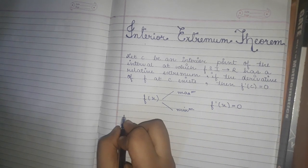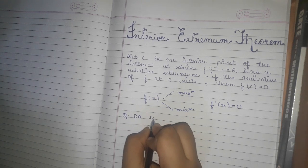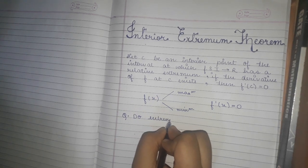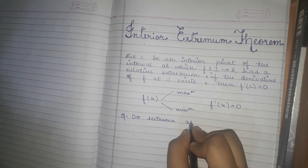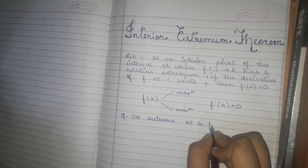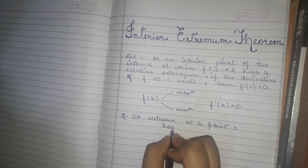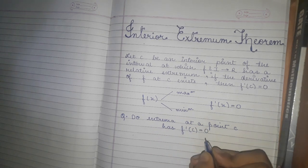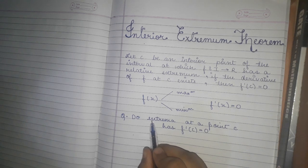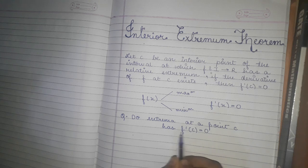The question arises: does every extrema — that is, minima or maxima — of a function at a certain point, let that point be c, necessarily have f'(c) equal to 0? So the question is: if a function has an extremum at some point c, is f'(c) always equal to 0?